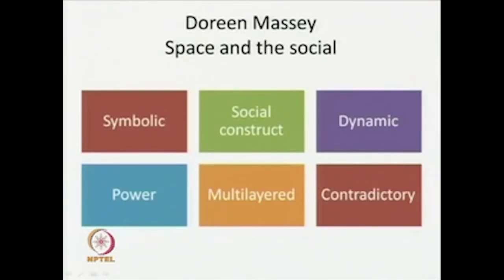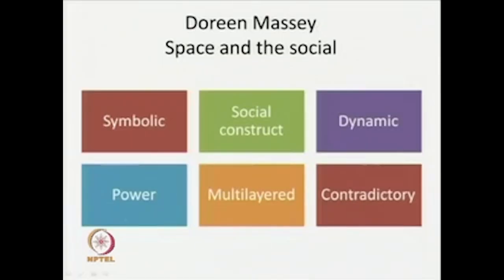As always, we do a recap of what we discussed in the last lecture. The last lecture was devoted to space — the way space is seen in cultural theory, and we looked through a book by Pramod Nair. We came upon Dorian Massey's theorization of space as social, and we found that space is not simply geographical. Space is symbolic, space is a social construct, space is dynamic, space has to do with power, space is multilayered, and there are also contradictory issues relating to space.